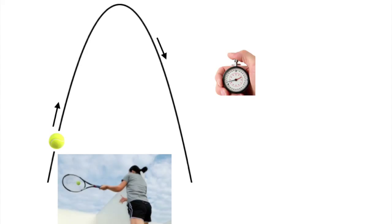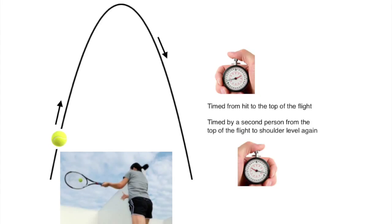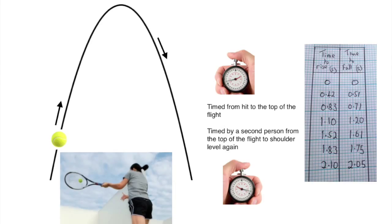Many of the graphs we draw are from experimental results rather than by calculation. Illustrated here is an experiment done by some students where they hit a ball up in the air at different heights, timed it on the way up and then timed it again on its fall. So the pairs of times from the hit to the top of the flight and from the top of the flight back down to shoulder height were recorded.